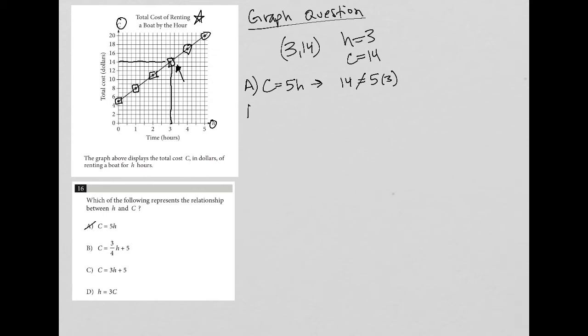For choice B, I have c equals three-fourths h plus 5, which would mean that I'd have 14 equals three-fourths times 3 plus 5. So this is nine-fourths plus 5 is equal to 14. I know that 9 plus 5 is 14, so there's no way that nine-fourths plus 5 is equal to 14, so no need to continue doing the math there. So this is also not true, so B is out.